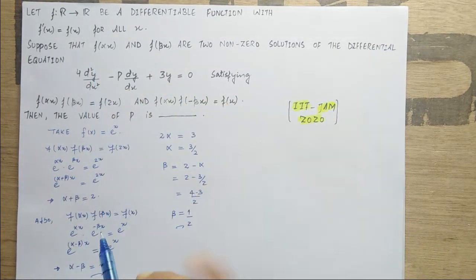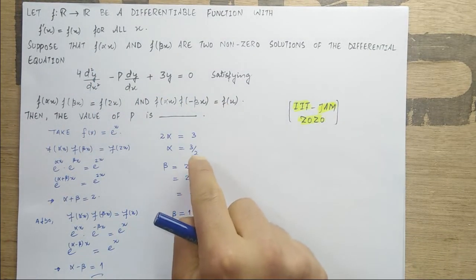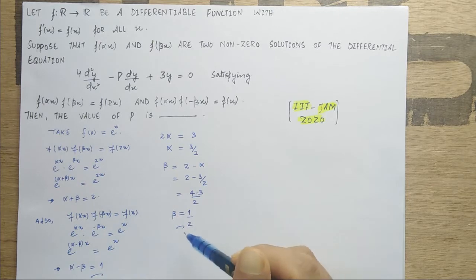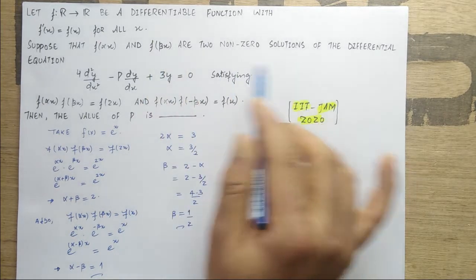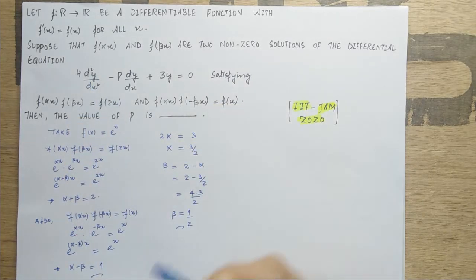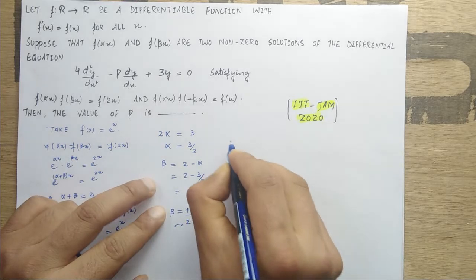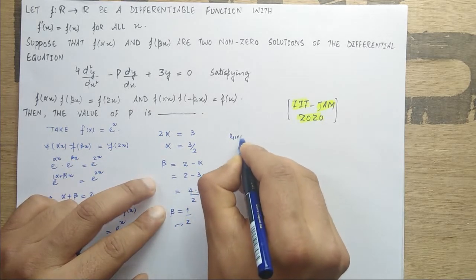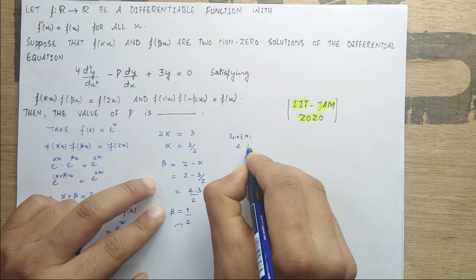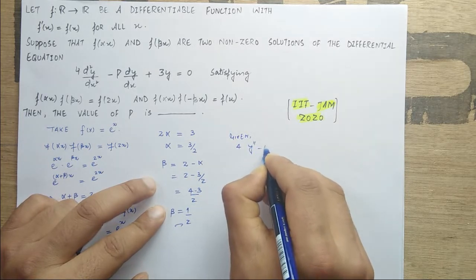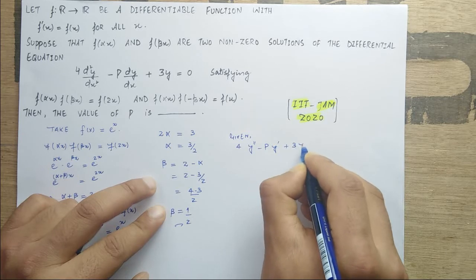So f(αx) = e^(3x/2) and f(βx) = e^(x/2) are the two non-zero solutions of the differential equation. Since these satisfy the given differential equation, substituting into the equation 4y'' - py' + 3y = 0.